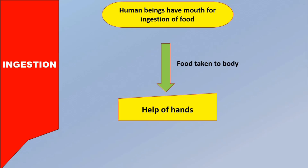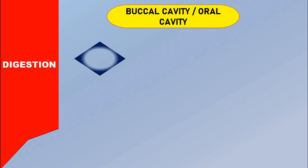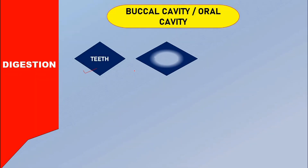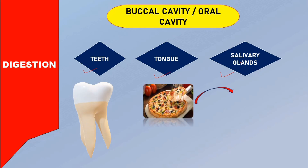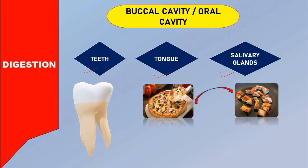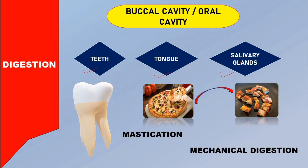The process of taking food into the body is called ingestion. Human beings have a mouth for ingestion. Food is taken into the body through the mouth with the help of hands, and from there it goes into the buccal cavity or oral cavity. The buccal cavity contains teeth, tongue and salivary glands. The teeth break food into small pieces, chew and grind it. Chewing mixes these small pieces of food with saliva, and this process is known as mastication. This digestion of food inside the buccal cavity is called mechanical digestion.